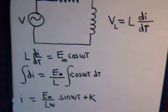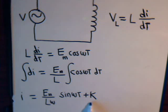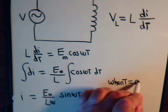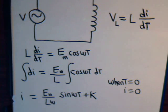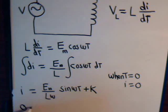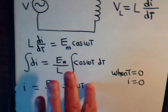So we see that if the induced voltage is a cosine wave, the current is a sine wave. For the arbitrary constant K, we know at time T equals zero there is no current. When T equals zero, the sine of zero is zero, so we have zero equals zero plus K, meaning K equals zero. We can get rid of that constant.